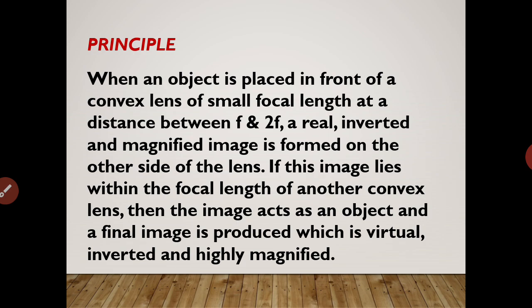So we see that in a compound microscope we have two convex lenses. The image formed due to the first lens must lie within the focal length of the second lens. If this happens, we get a virtual, inverted and highly magnified image. This is the basic principle of the compound microscope.